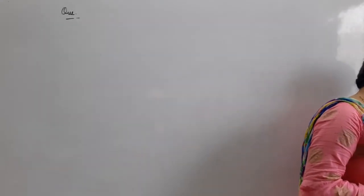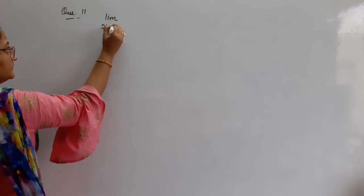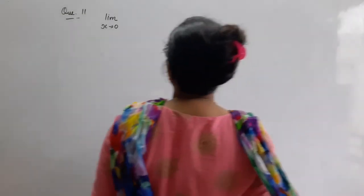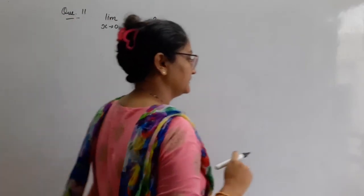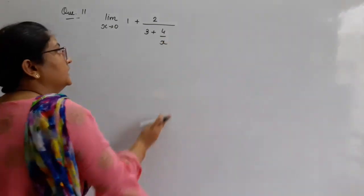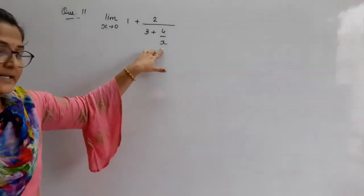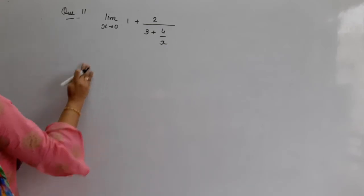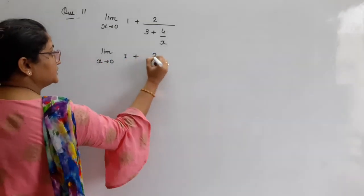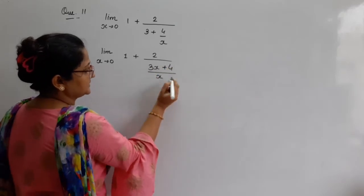See, question number 11. Limit x tends to 0. Limit x tends to 0. 1 plus 2 upon 3 plus 4 upon x. Yeh na multi-floor wala sum hai. See, 1 floor, 2 floor, 3 floor. Ab jo karna hai na, niche se start karte jana hai. Niche se LCM lete chalo. So friends, limit x tends to 0. 1 plus 2. Yeh x yeh 3 ke saath multiply karo. So yeh ban gaya 3x plus 4 upon x. Clear. Yeh x chala jayega upar.